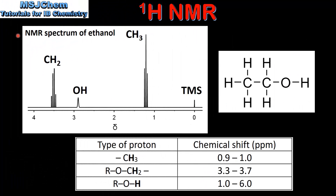Next we look at the NMR spectrum of ethanol. On this spectrum we have three peaks. The first peak corresponds to a CH3 group, the second to an OH group, and the third to a CH2 group. And if we look at the structural formula for ethanol we can see it's composed of a CH3, a CH2, and an OH group.